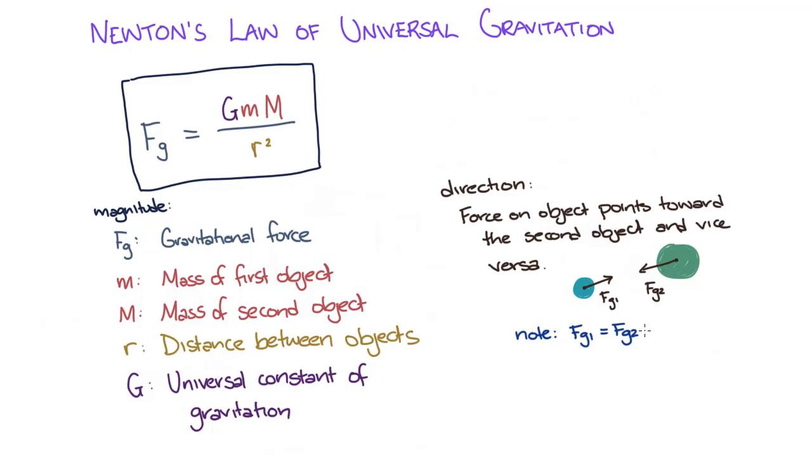So, what does big G equal in our equation? It turns out from experimental observations that big G is equal to 6.67 times 10 to the minus 11 Newton meters squared over kilograms squared.